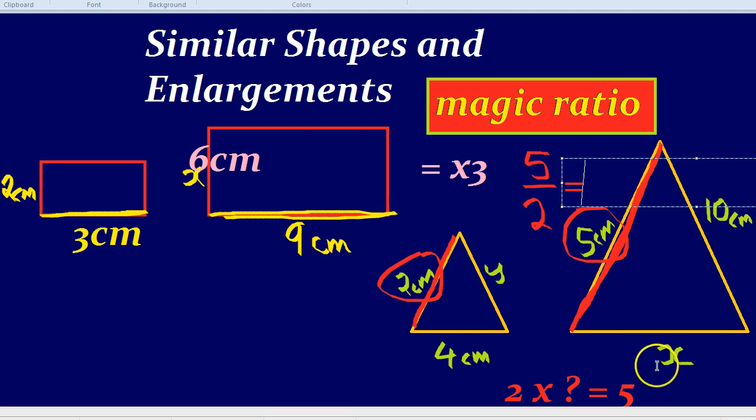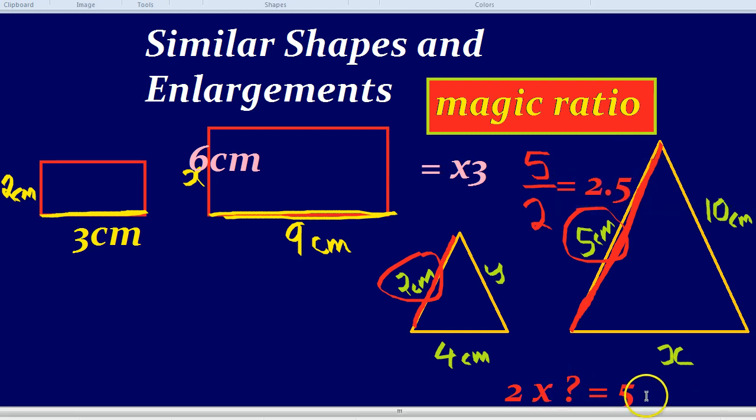What is half of 5, or 5 divided by 2? It's 2.5. And equally true is that 2 times 2.5 equals 5. So the magic ratio equals times by 2.5. Now we can find all the other ones. To get to the smaller triangle, to the bigger triangle, we times by 2.5.